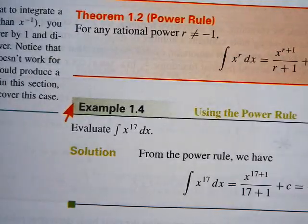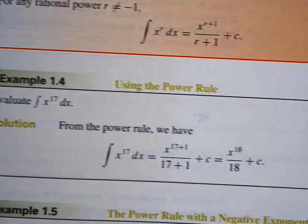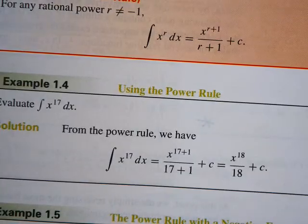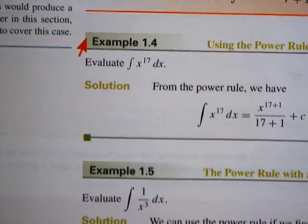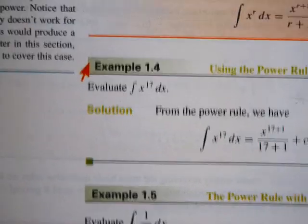So like this one. X to the 17th. Now, where are we at? X to the 17th. Well, it's X to the 18th divided by 18.